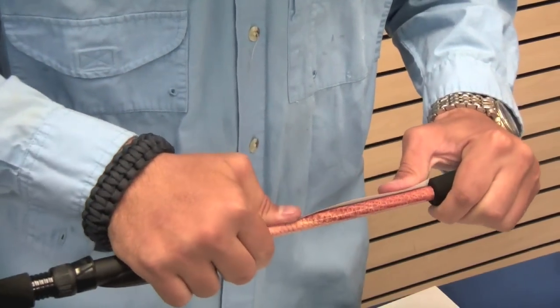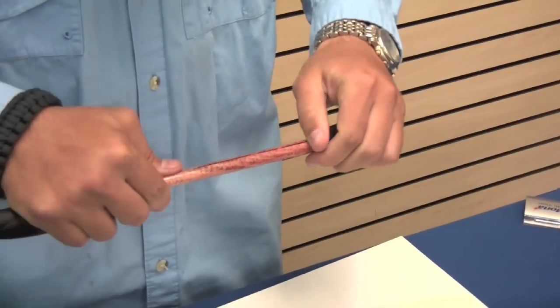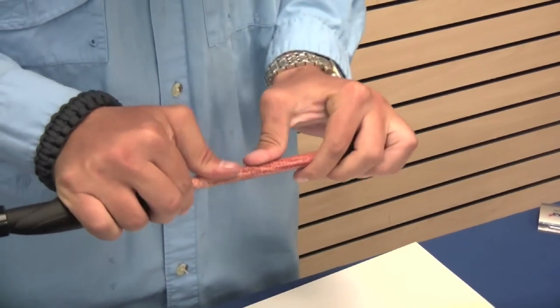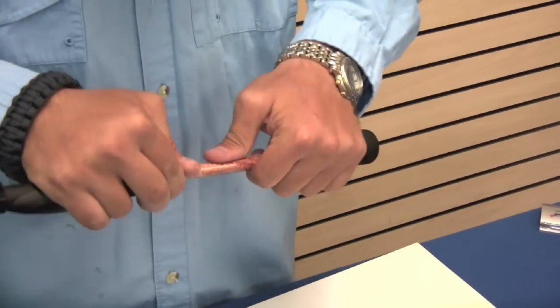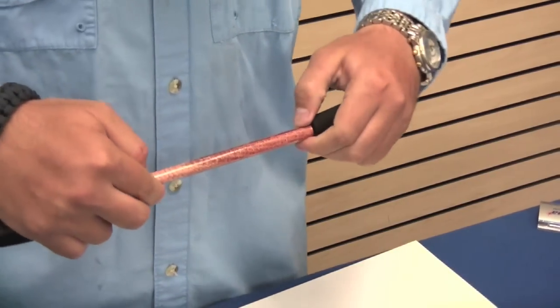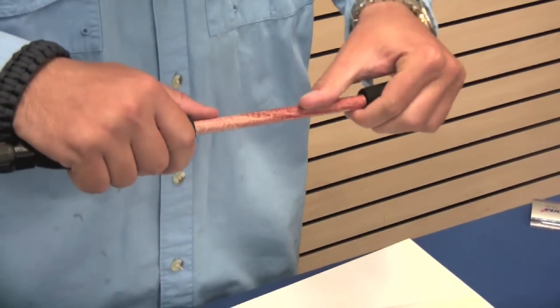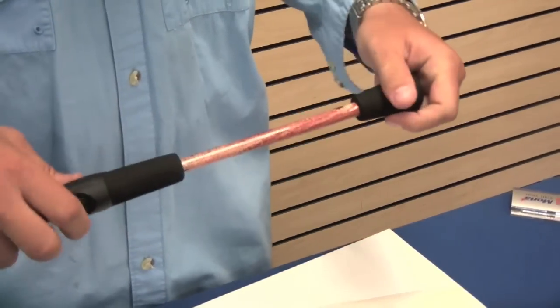Once you've got that off, you can go ahead and finish your seam. Make a nice tight seam. You can use some alcohol to get that Sharpie mark we used for our cutting lines off and then you're ready for finish.